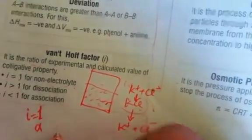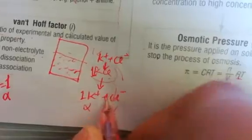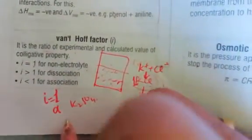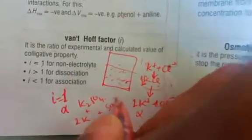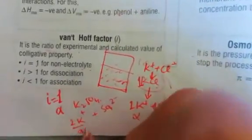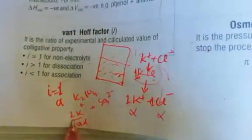The value of i before association or dissociation is 1. In case of dissociation, we use the degree of dissociation α. For example, 1 mole of KCl gives 1 mole K⁺ and 1 mole Cl⁻. But for K2SO4, 2 moles of K⁺ and 1 mole of SO4²⁻ are produced — so 2α is used. You need to be careful in numericals. This is the most important aspect of this chapter.